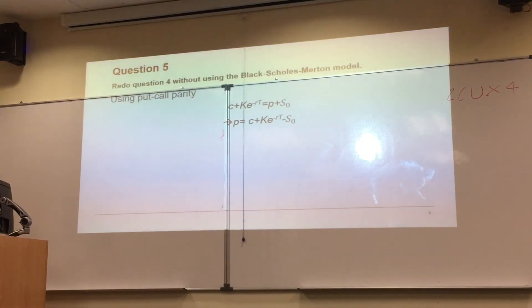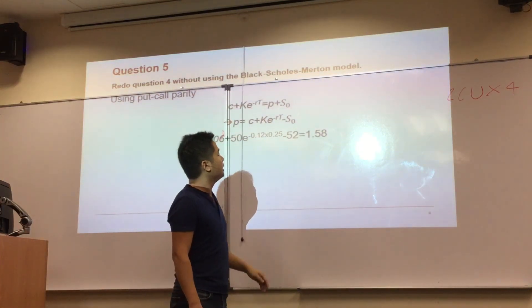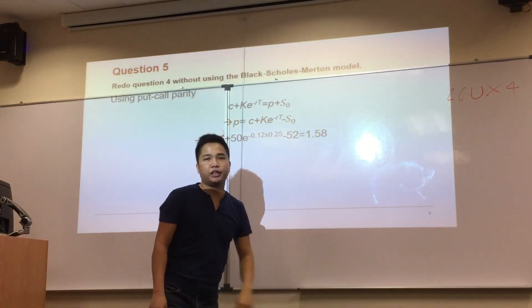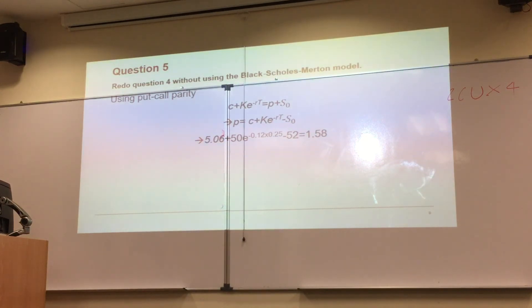You have the value for all the variables already. So you just put it in. C is this much, K e to the minus RT minus S0. So it equals 1.58. It should be equal to the same as the way we do the Black-Scholes-Merton version.